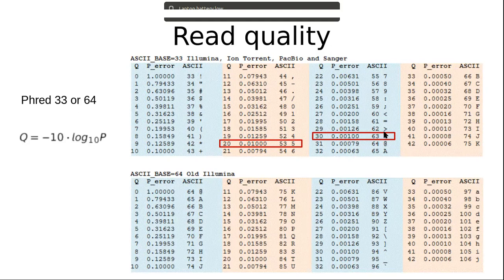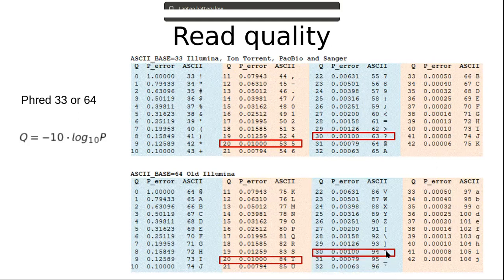The reason why I am showing you 20 and 30 are, these are the cutoffs which you are going to see whether the position is having a good quality or not. Anything more than 20 is considered as acceptable, and anything more than 30 is considered as good. Whereas, any base is having quality score less than 20, we are considering it as error and we are going to trim it. This and all I am going to discuss in the next session.